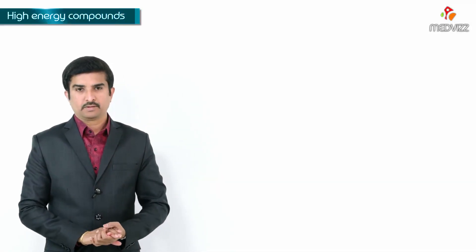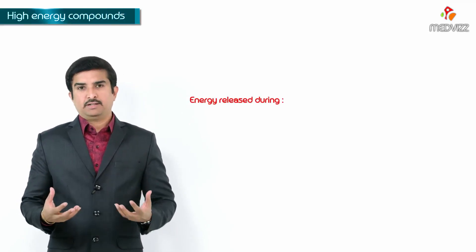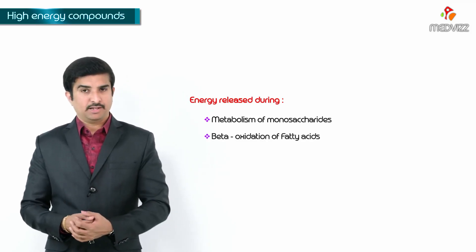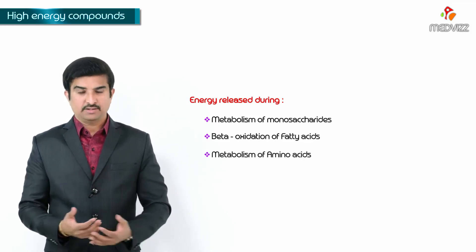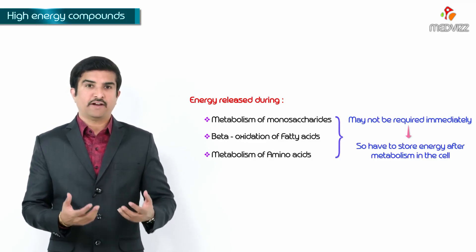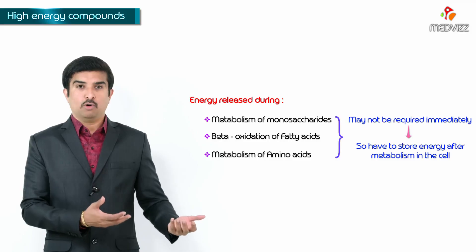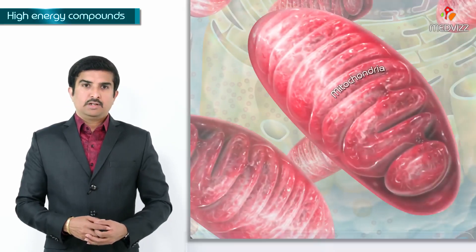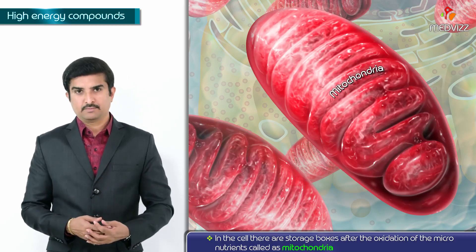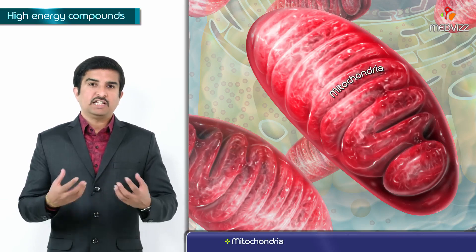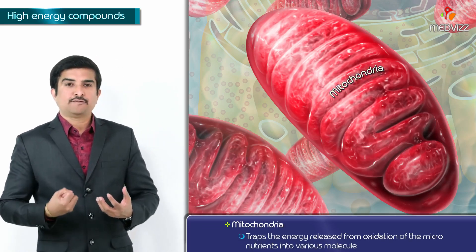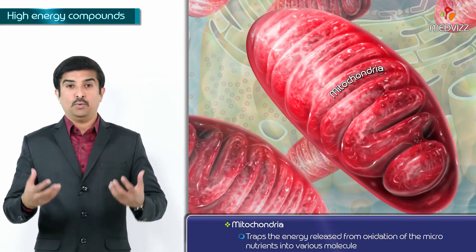The energy liberated during the metabolism of monosaccharides, beta oxidation of fatty acids in the mitochondria, or metabolism of amino acids may not be required immediately. We have to store some form of energy after metabolism is completed. In the cell we have storage boxes called mitochondria, which store the energy after oxidation of these nutrients. These mitochondria are called the powerhouses of the cell.